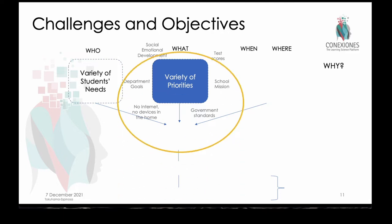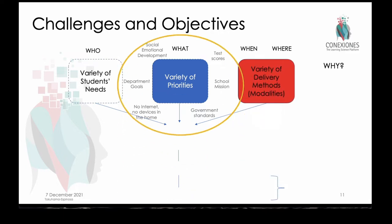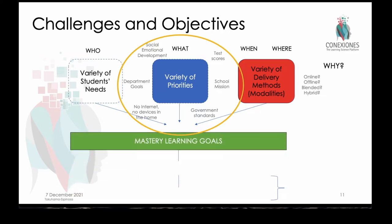We also have to think about the when and where of education, which shifted a lot with COVID. We now have online, hybrid, and blended learning situations. Depending on your objectives, they can be met in different platform situations or learning environments better than others. Having to pivot so often from one modality to another actually shifted a lot of people's objectives as well. This gives us a clearer focus on mastery learning goals — something like, by the end of the second year of university, these students will be able to do or value whatever. Then we can do that at a meso and micro level as well.